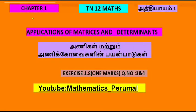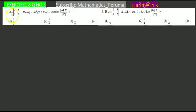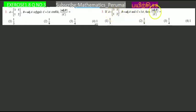Chapter 1, question 3. We have a 2×2 matrix A. B is equal to the adjunct of A, and C is equal to 3A. We need to find the determinant of adjunct of B divided by the determinant of C.